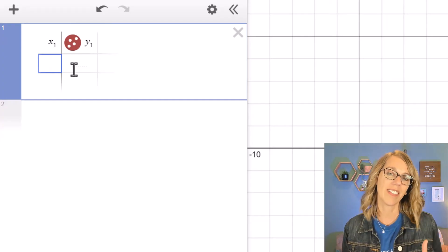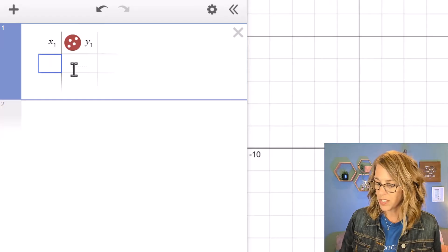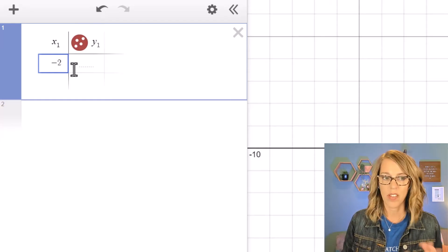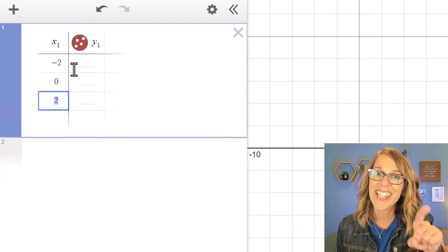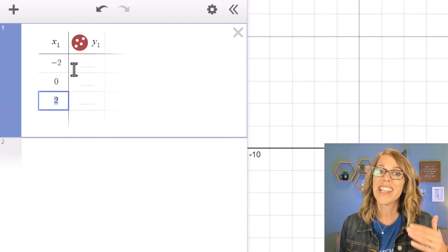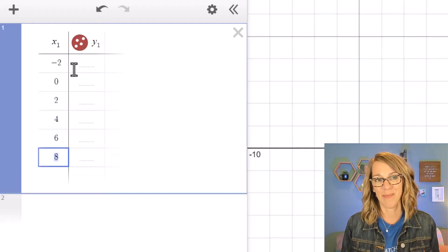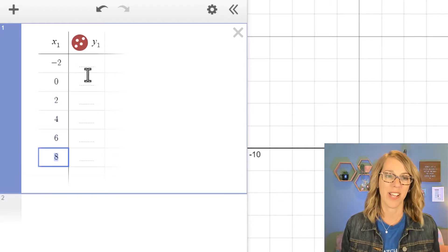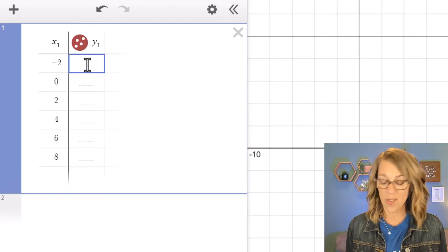Let's say that we want our x values to be in increments of say two. So I'm going to start by typing in negative two and then enter, and then zero and then enter. Notice Desmos guessed that I wanted two next, so I can continue the pattern by just hitting enter to continue the pattern. Notice that they're all separated by two and then I can just put in anything here that I want for my y coordinates.